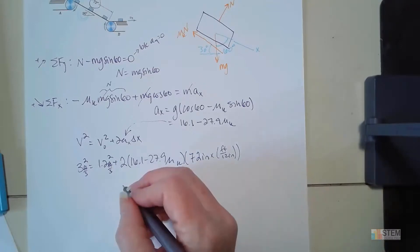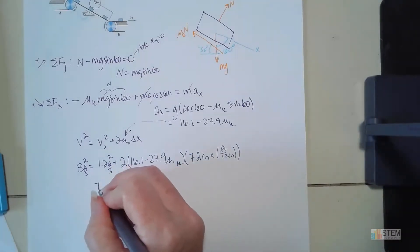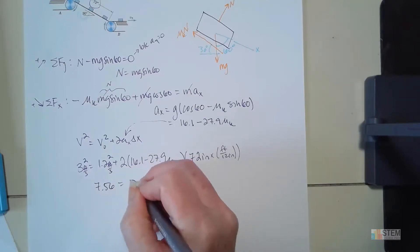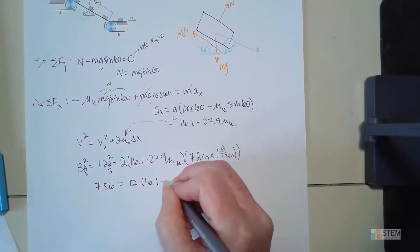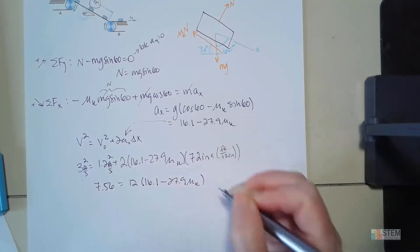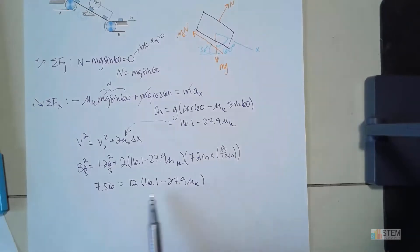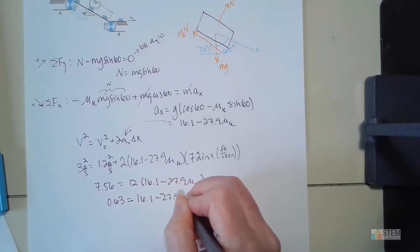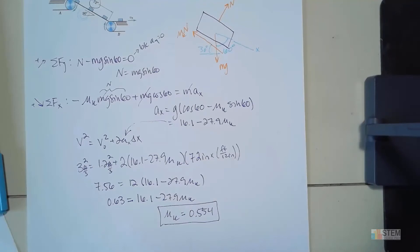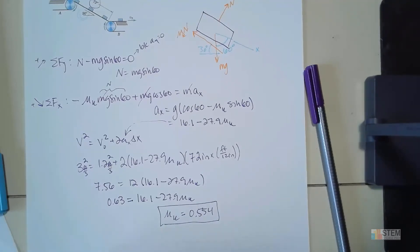So if you simplify this, you're going to get 7.56 equals 12 times 16.1 minus 27.9 mu sub k. And then you can simplify it again from there. So 0.63 is going to equal the 16.1 minus 27.9 mu. And now you can solve for mu, which is 0.554. And that'll be it. That's your coefficient of friction for that problem.